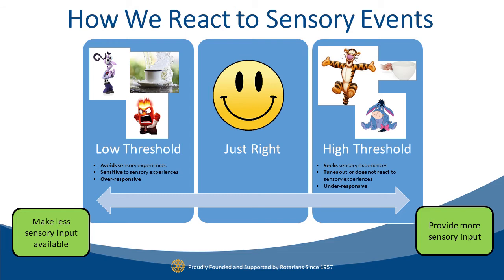Moving to the right side of the continuum, we have the high threshold — kids we sometimes call seekers. They may seek out more movement and more touch than other children. They may also have difficulty registering sensory information, meaning they may miss pertinent information or need a more stimulating environment to attend and participate. When you see the words under-responsive or seeking, we're referring to the child who needs more stimulation in their daily routines. Think of Tigger — a seeker has a higher activity level, likes to touch everything, and might smell or put everything in their mouth. They have a big cup and are actively trying to fill it.